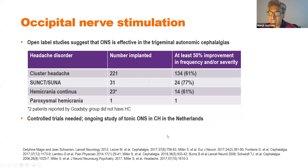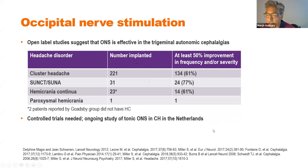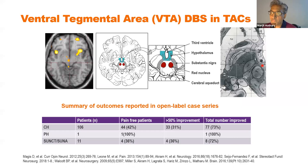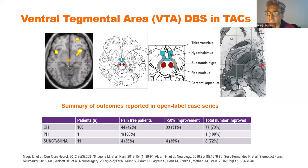For occipital nerve stimulation, we only have open-label evidence: across 221 reported patients, 134 were responders — a 61% response rate — in patients otherwise intractable to all treatments. A Dutch RCT is awaited. Deep brain stimulation targets the ventral tegmental area (posterior to the hypothalamus, between the hypothalamus and red nucleus). Open-label data show a 73% response rate with 42% of patients rendered pain-free. This is a highly invasive treatment reserved for patients who have failed all other options.